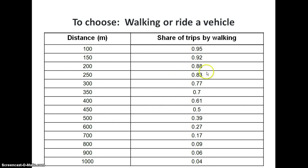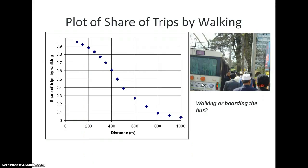At 300 meters, the percentage willing to walk is only 77%. If we plot this, we can see the shape is like an S-shape, which we call a logistic function.